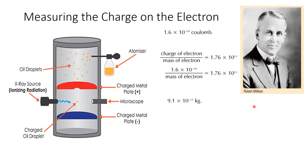Robert Millikan, an American physicist, devised an experiment to work out the charge on the electron. The negatively charged particles had been discovered and the charge-to-mass ratio was known, but now scientists wanted to determine the exact charge and exact mass of the electron. In Millikan's apparatus, an atomizer containing oil sprays a fine mist of oil droplets into an upper chamber. These tiny oil droplets are neutral and are pulled downward by gravity through the apparatus into a lower chamber.